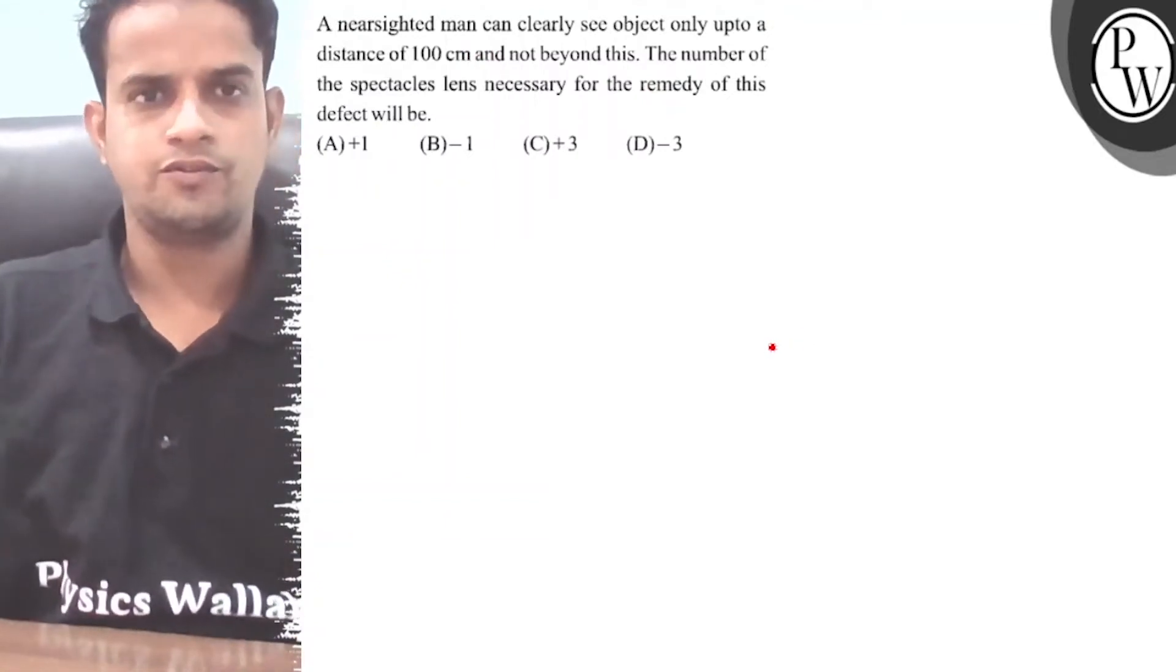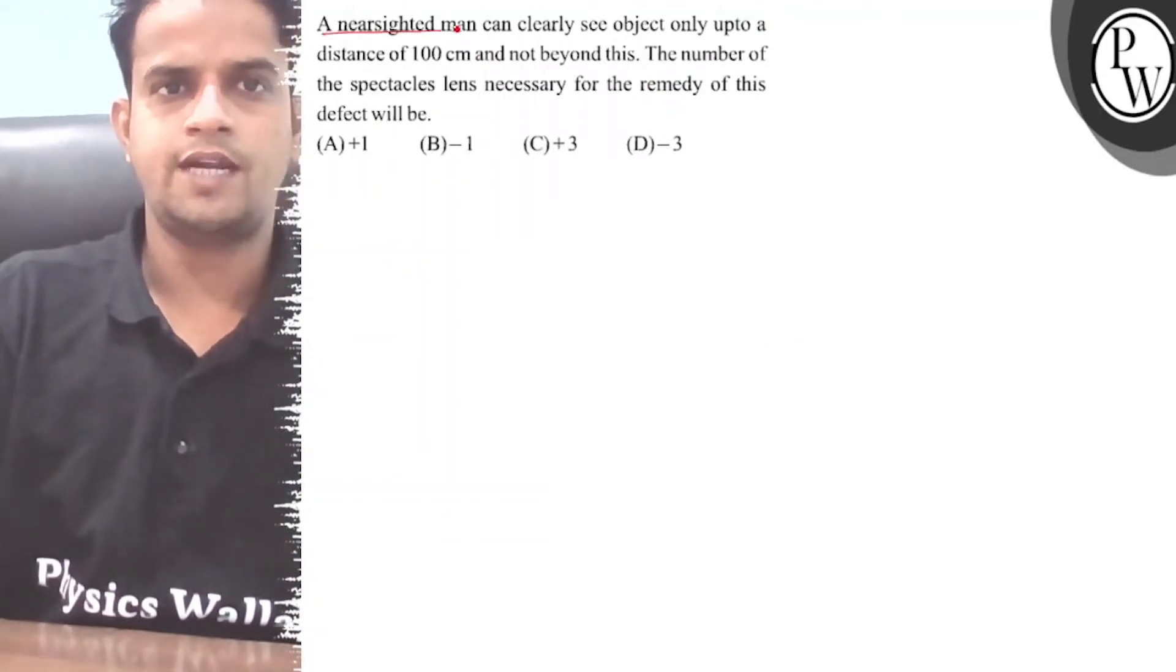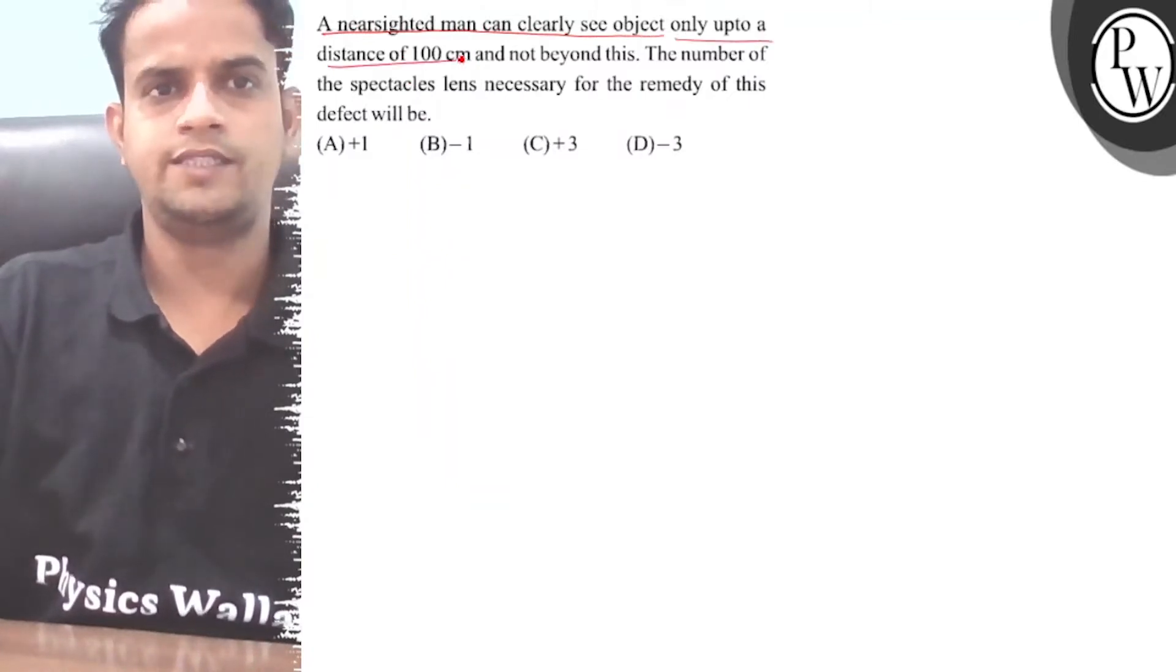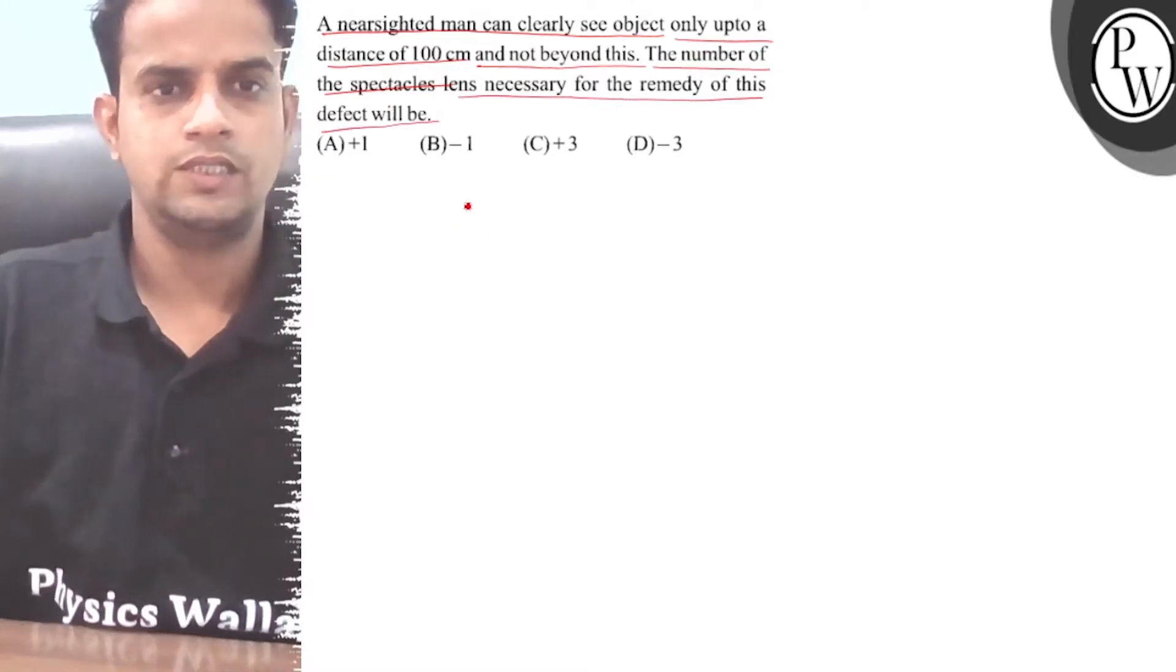Hello, let's consider this question. A nearsighted man can clearly see objects only up to a distance of 100 centimeters and not beyond this. The number of spectacle lens necessary for the remedy of this defect will be...